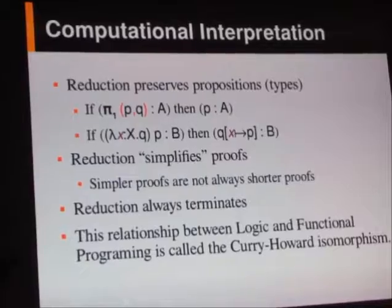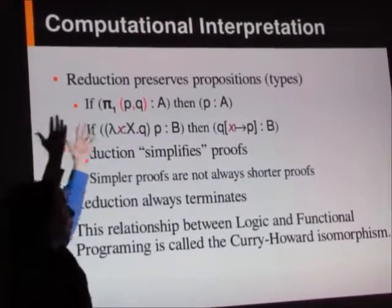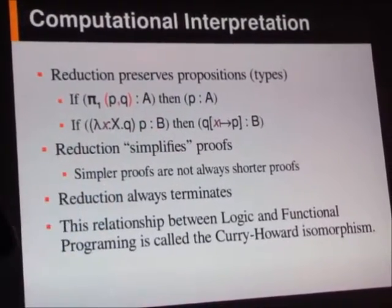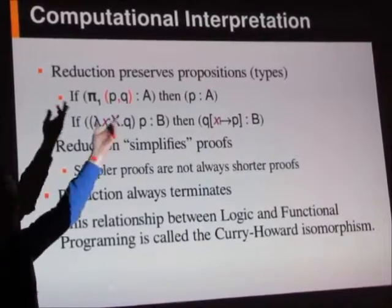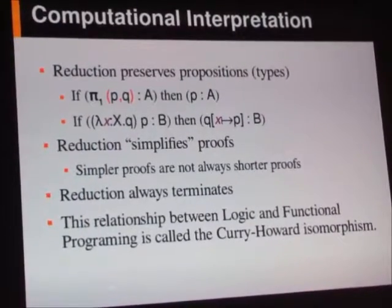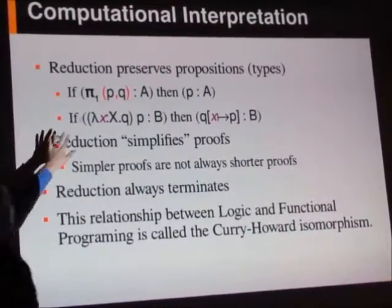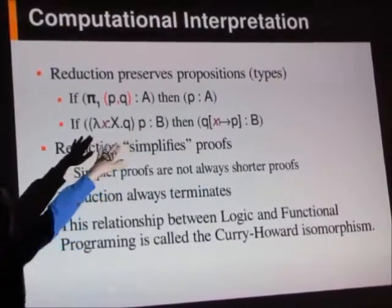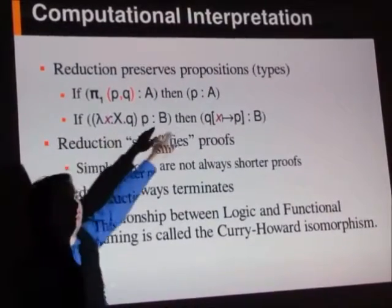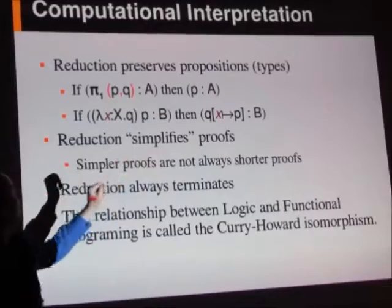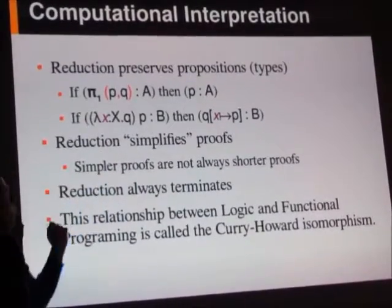So our important property here is that reduction preserves propositions, and instead of calling them propositions, we're just going to call them types. And so if we have pi 1 of p comma q has type a, then it is the case that p has to have type a, and so therefore the reduction is type preserving.